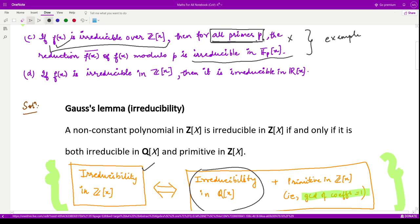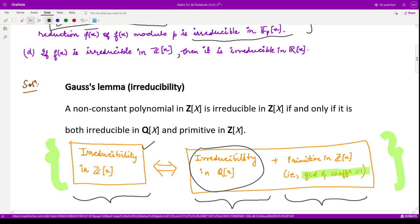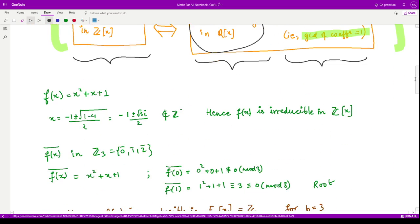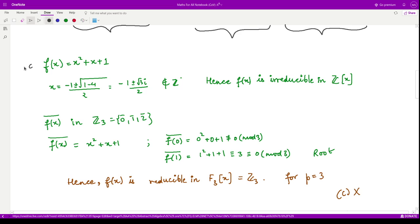That means you need to find a prime p such that the second condition does not hold. So let us have a look at one polynomial. This is for option C. We have this polynomial x² + x + 1. Now you clearly see that this polynomial when we try to find its root, they are complex roots, and they obviously do not belong to the set of integers. Therefore this polynomial in Z[x] is irreducible.